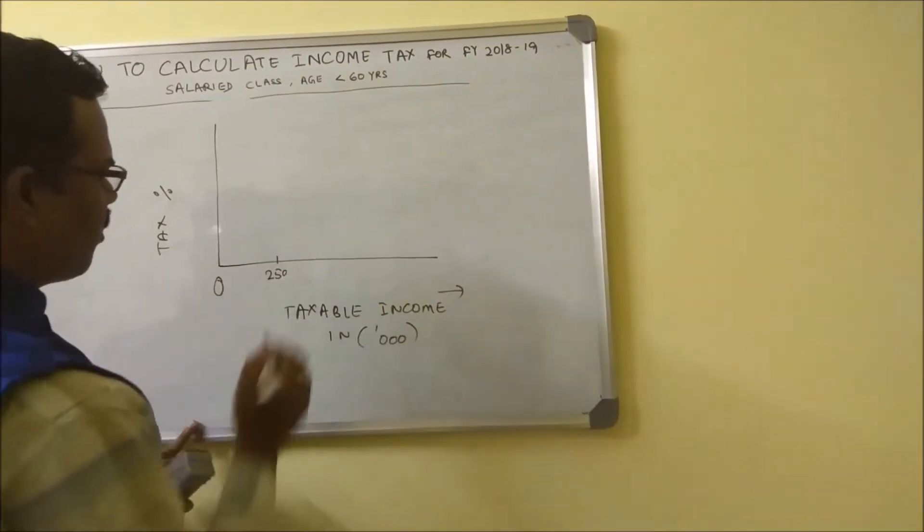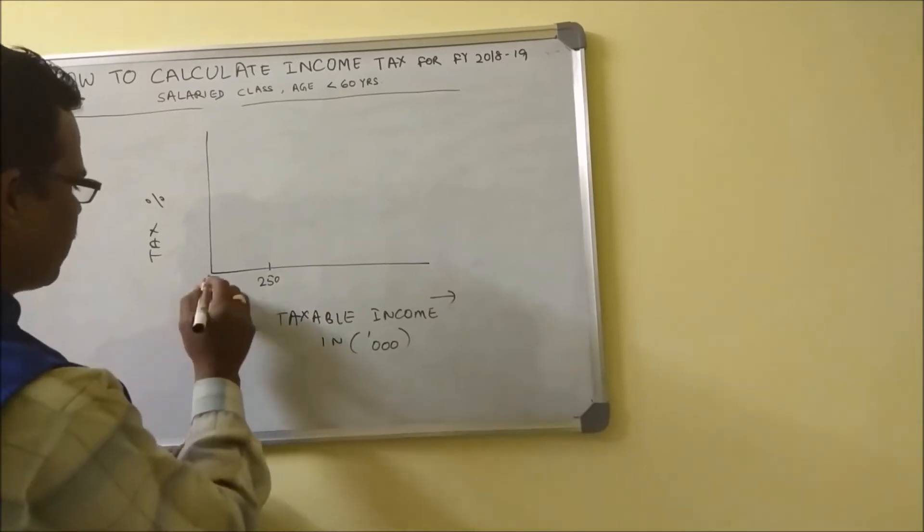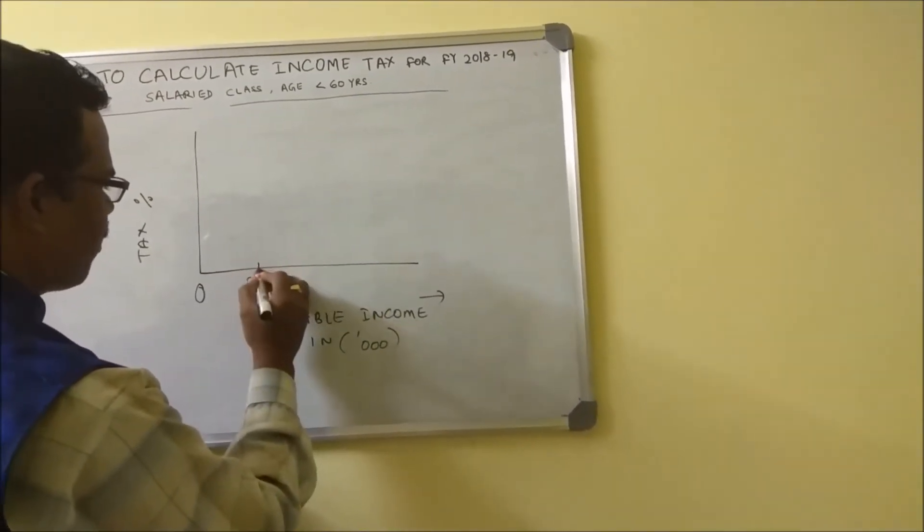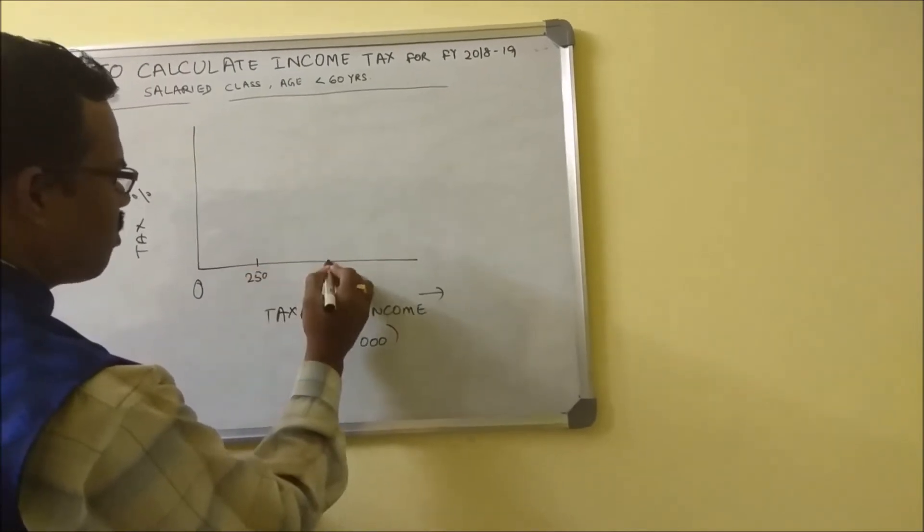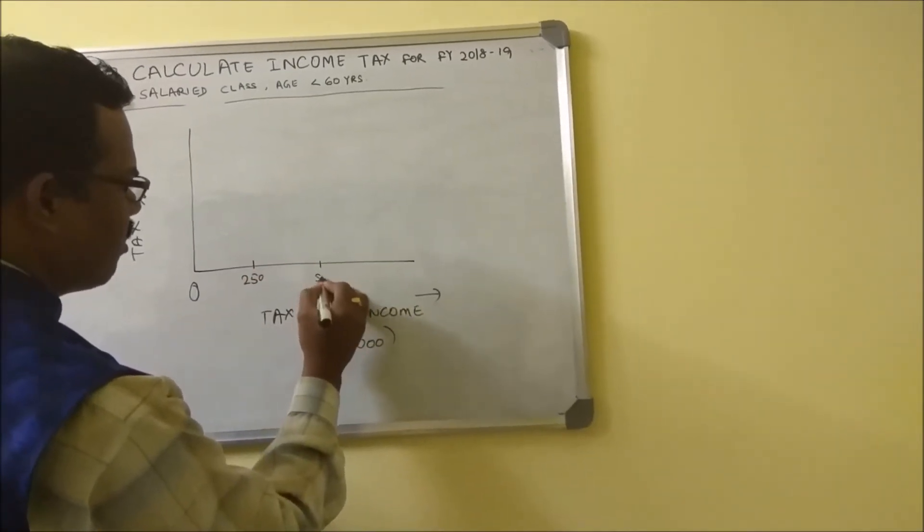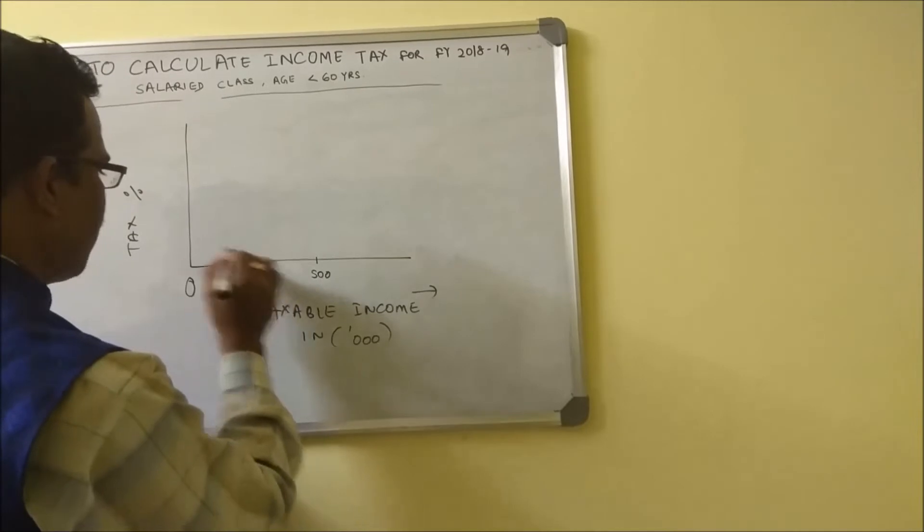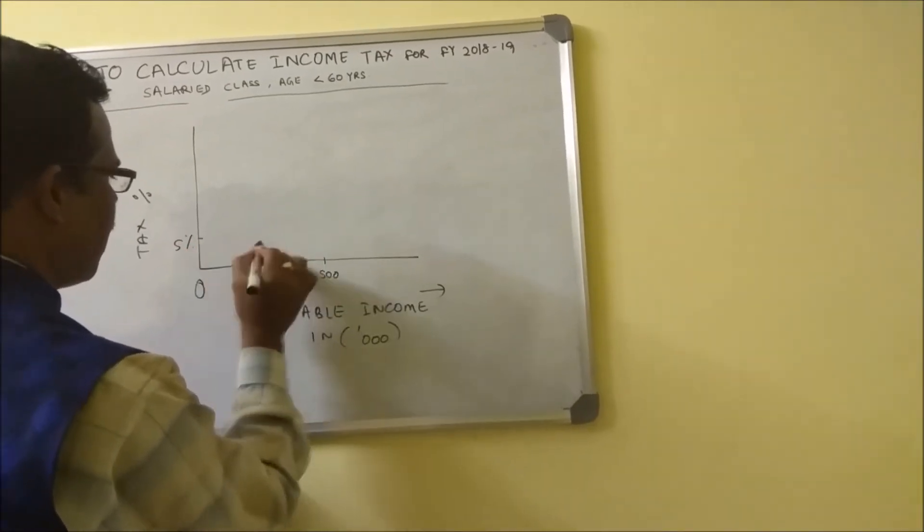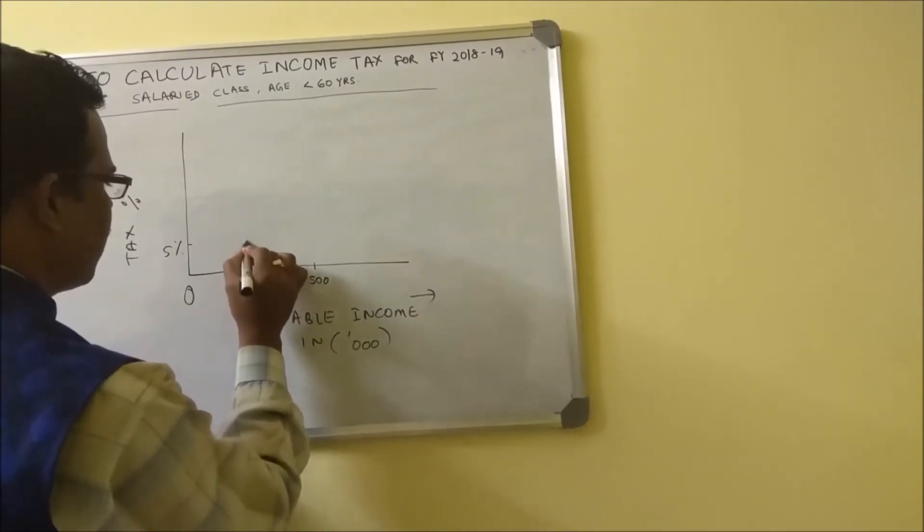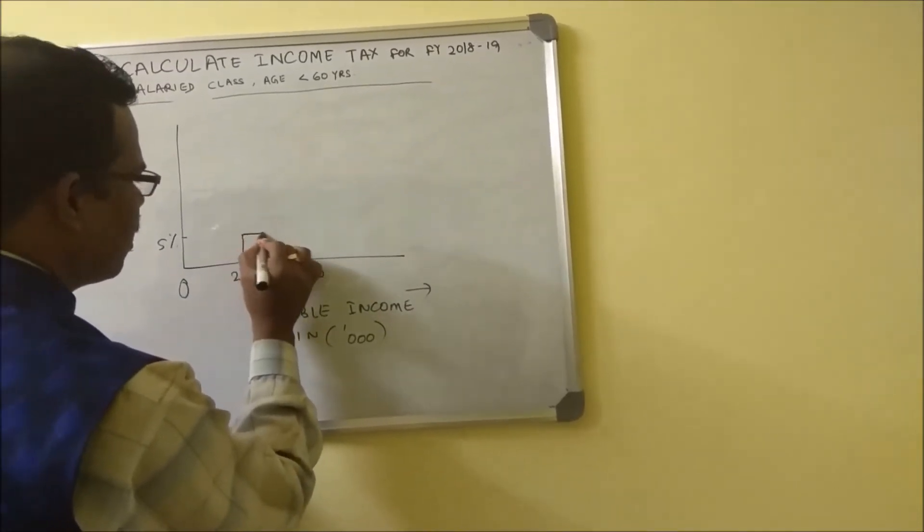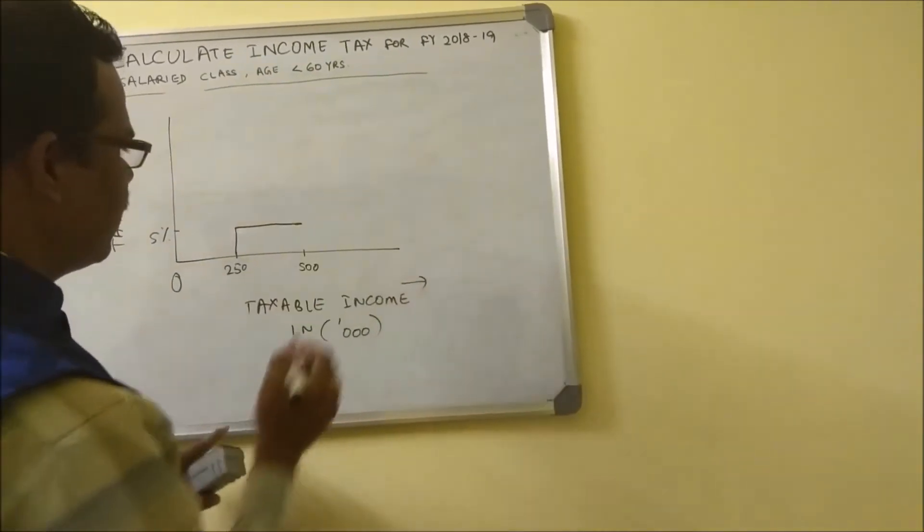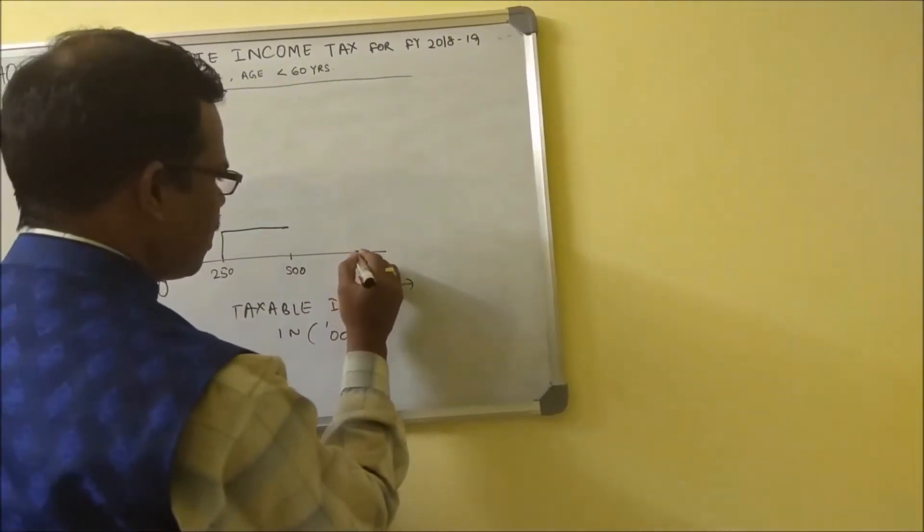The moment you cross 250,000 till five lakh, that is 500,000, we have five percent. It will rise like this and remain five percent till five lakh, and then next is ten lakh.